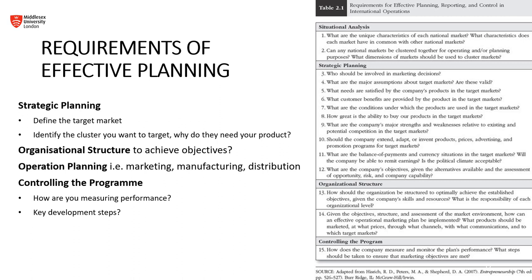Going along with that — what are the key development steps and key milestones? Something that can help with this process is visually depicting or drawing out a Gantt chart. A Gantt chart establishes a timeline — whether in weeks, months, or years — and gives you a visual representation of the key development steps you need to accomplish if you're planning on expanding globally. You can use a Gantt chart for any project management task, and if you're a visually oriented person, it can be very valuable to you and your company.